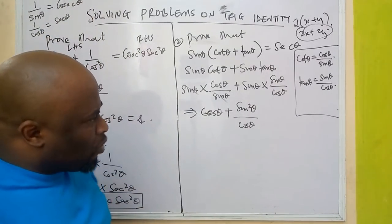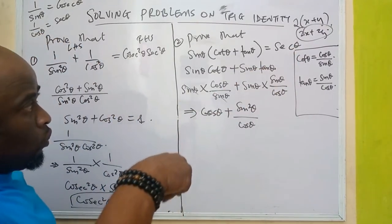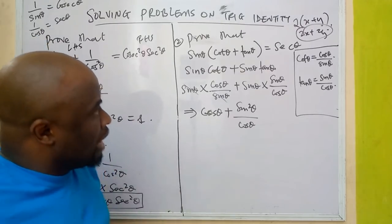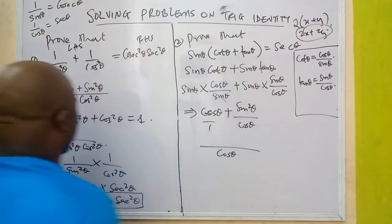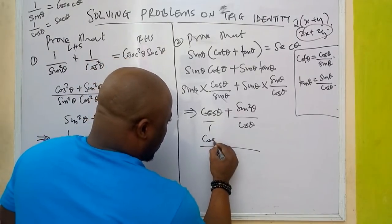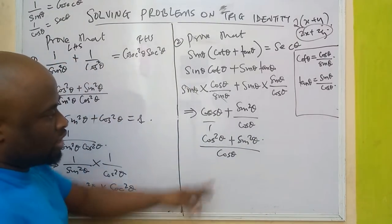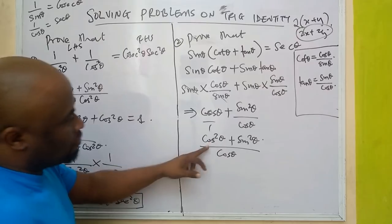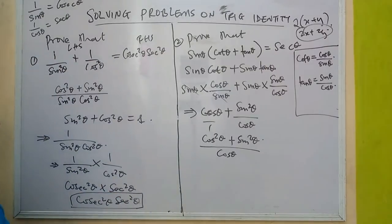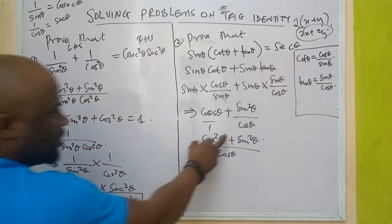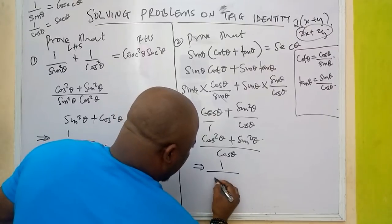Now, what operation can we perform here to arrive at the answer? We can put cosθ over 1 so we can combine the fractions. Cosθ times cosθ gives cos²θ. So the numerator becomes cos²θ + sin²θ, all over cosθ. Since sin²θ + cos²θ = 1, I replace the numerator with 1. So I have 1 over cosθ.